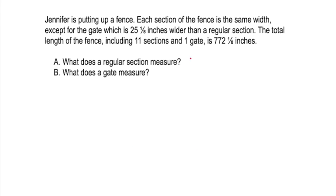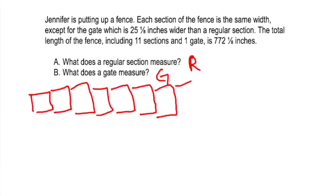So I'm going to call regular section R, and I'm going to call gate G. I'm going to draw myself a picture. We have 11 sections, and we also have one gate. It's probably in the middle somewhere, but that's what we've got for a total of 772⅛ inches.